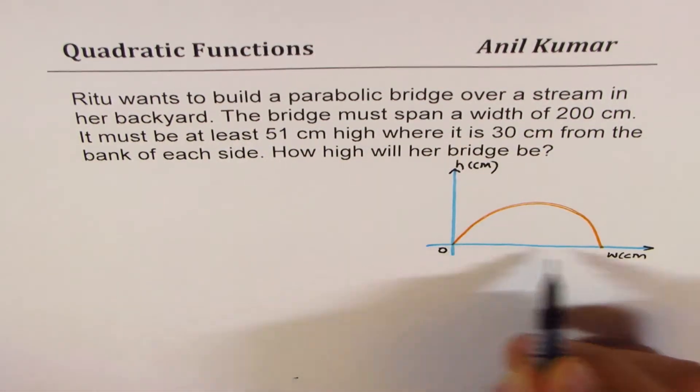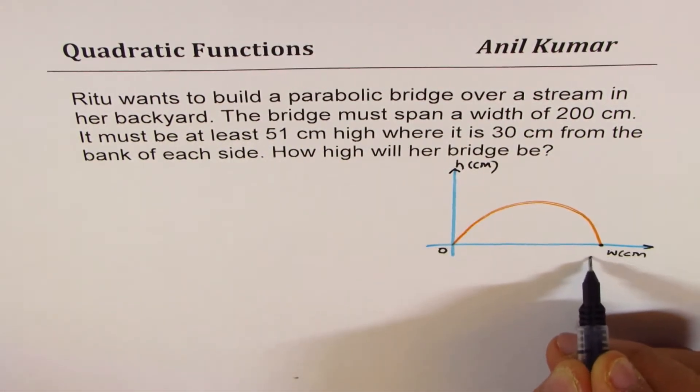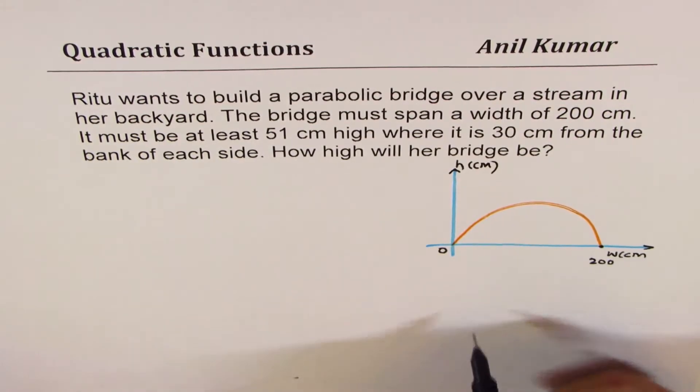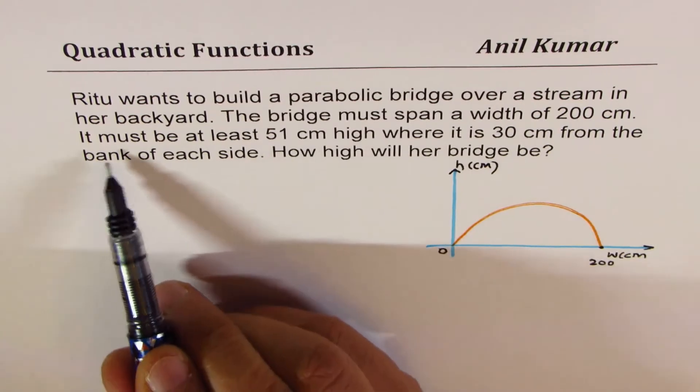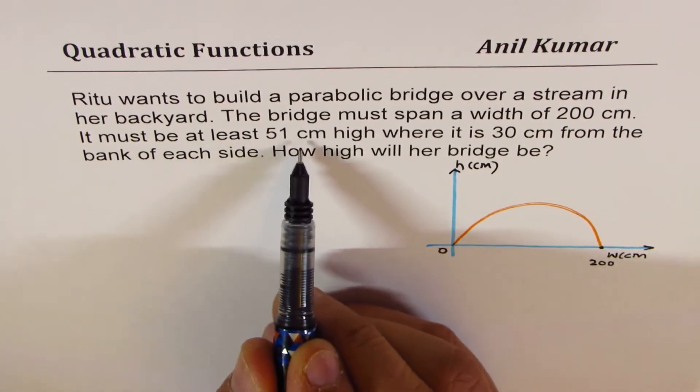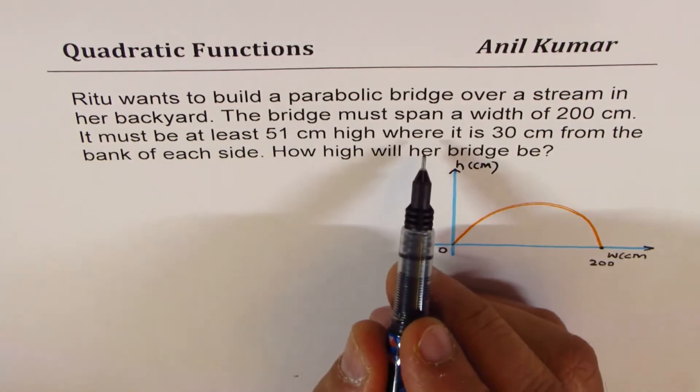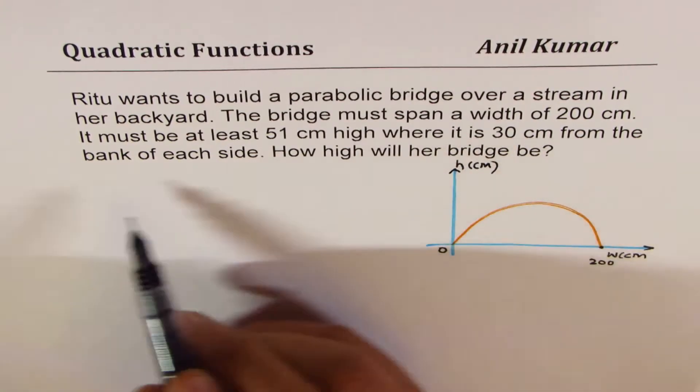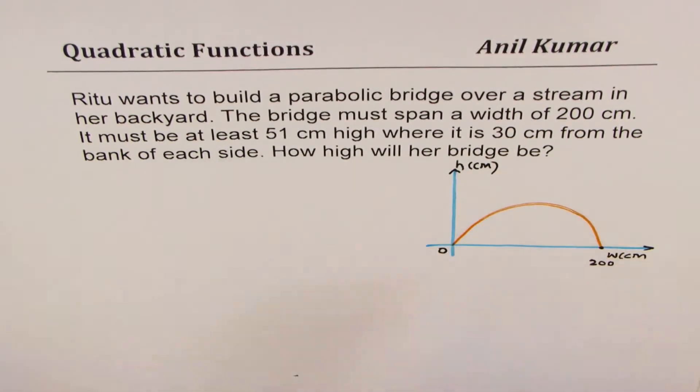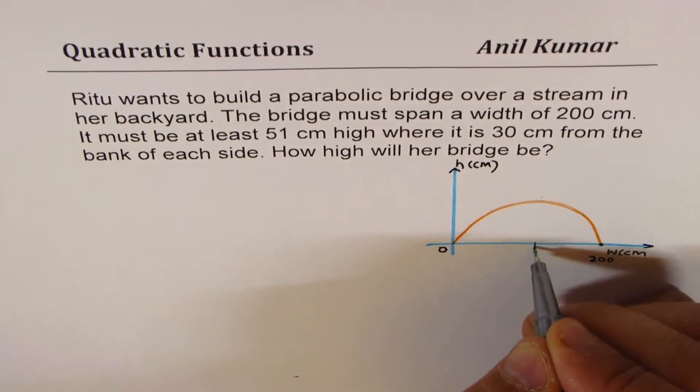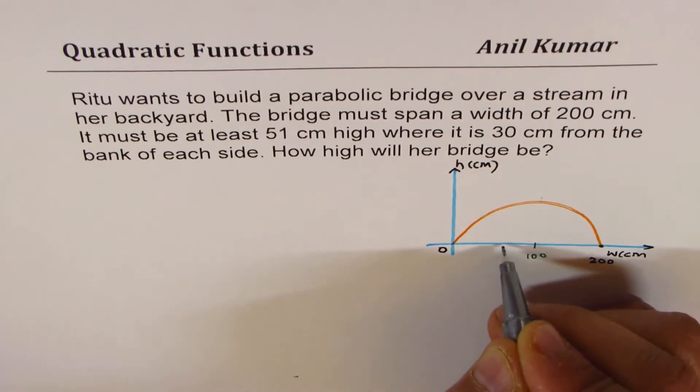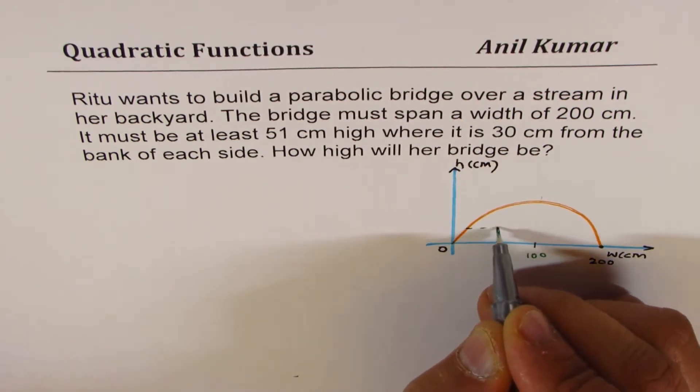When we say that the bridge must span 200 centimeters, it means from here to end it is 200 centimeters. Another condition given to us is it must be at least 51 centimeter high where it is 30 centimeter from the bank on each side.